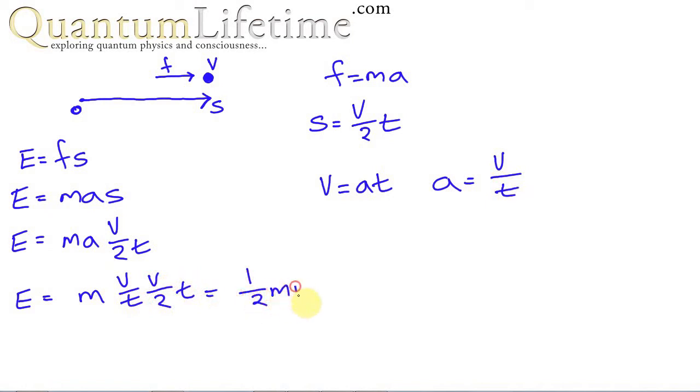of MV squared. And that's another definition of energy. If something's going with speed V and it has mass M, then we can work out the energy in joules. You could do this with your car. If you measure its speed in meters per second and you know how heavy it is in kilograms, you could work out how much energy